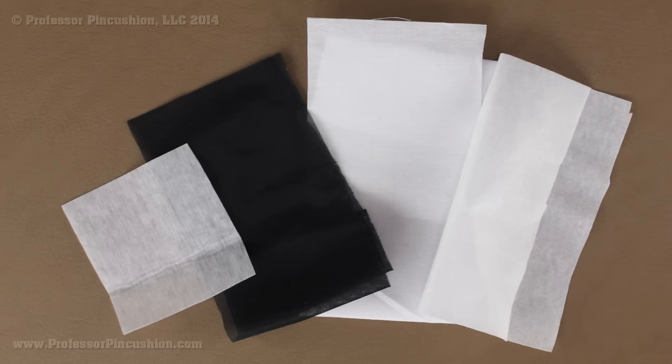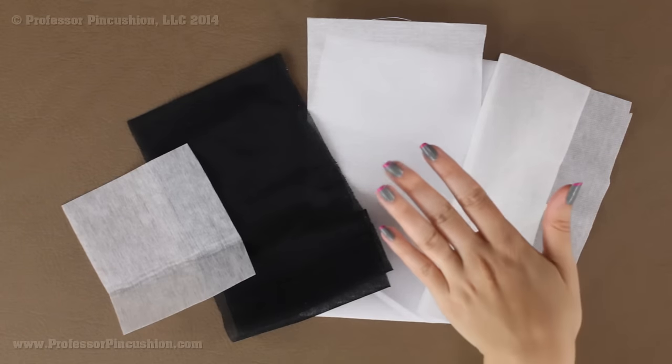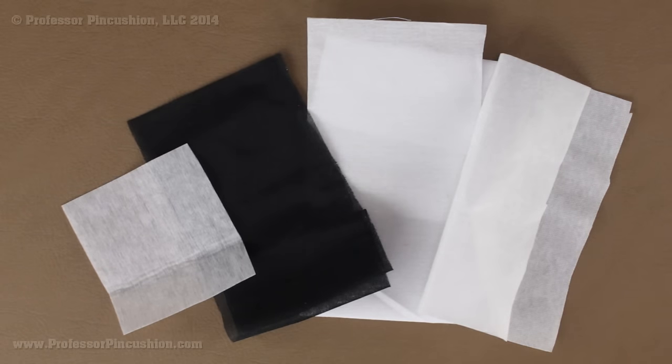We're going to be talking about what it is, different types and then how to use it. You can see the examples of interfacing here, these are different types. And what it is, is a material that goes on the inside or between layers of fabric in order to provide body, stability and stiffness to your fabric.